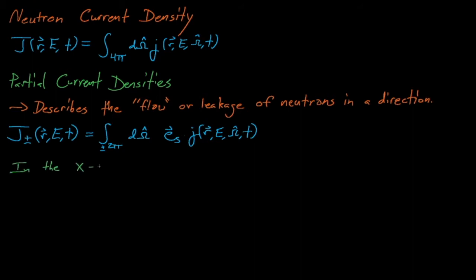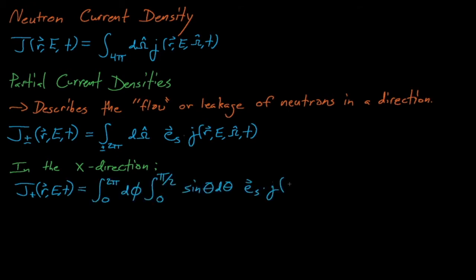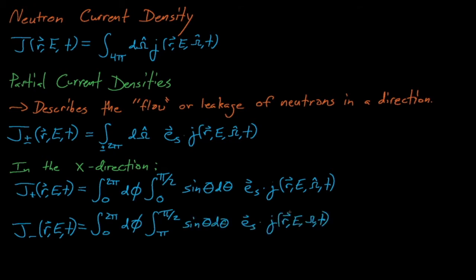Given our definition of omega, for positive 2π, the φ bounds range from 0 to 2π, and the θ bounds range from 0 to π/2. For the negative half sphere and the negative 2π, φ ranges from 0 to 2π again, and θ ranges from π/2 to π.